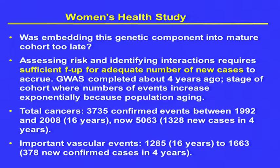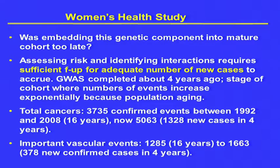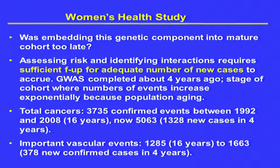Was embedding this genetic component into a mature cohort too late? It wasn't, because we were continuing to get endpoints. As long as you have sufficient follow-up for adequate numbers of new cases to accrue, it's going to be useful. Because the population was aging, we were getting endpoints exponentially. In the first 16 years we had 3,735 confirmed total cancers, and then in the last four years we got an additional 1,300. Important vascular events: 1,216 in the first period, and 378 in the last four years. The longer the cohort continues, the more exponentially you get endpoints for your investment.